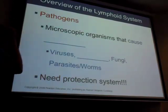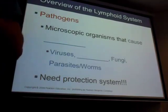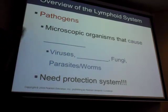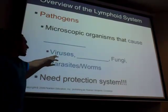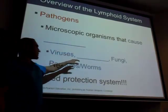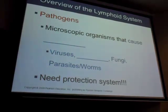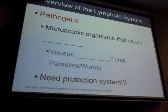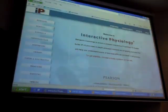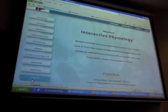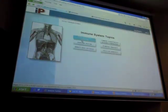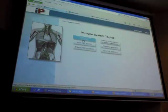Pathogens are things that cause disease — path means disease. Examples include viruses, bacteria, fungi, parasites, and worms. For the interactive physiology website, go to the immune system overview section. This analogy compares the body to a castle: the outer defenses are skin and mucus membranes. The wall represents skin, and the moat represents sweat or mucus.